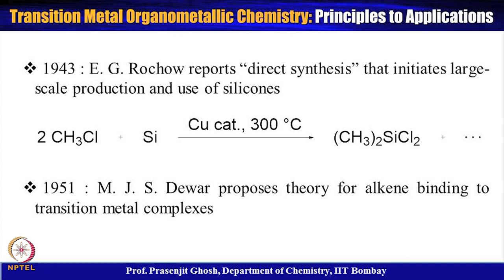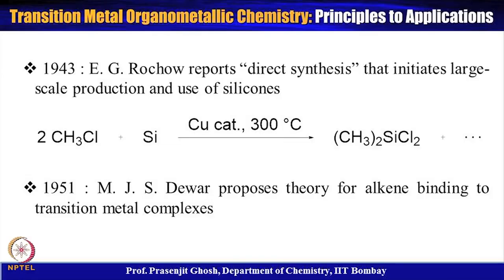In 1943, E.G. Rochow reported the first direct synthesis that initiated large-scale production and use of silicones. The reaction used methyl chloride with elemental silicon using a copper catalyst at 300°C, giving dimethylsilyl dichloride and other isomers. Silicon-based materials were also produced on a large scale in industry. Beginning from 1951, one can say the golden age of organometallic chemistry started, with many new and interesting compounds being synthesized.